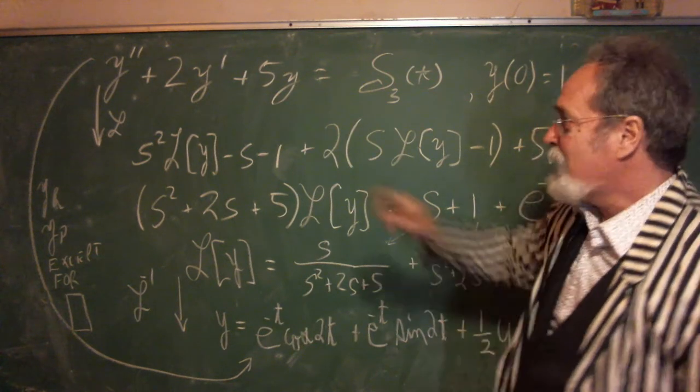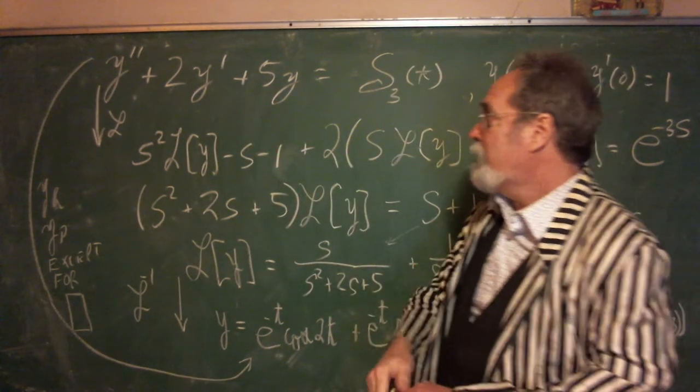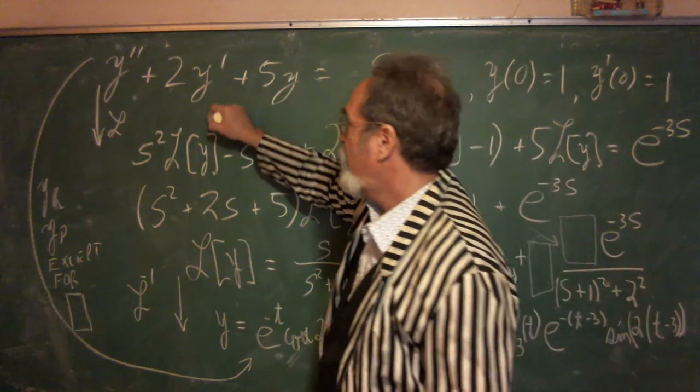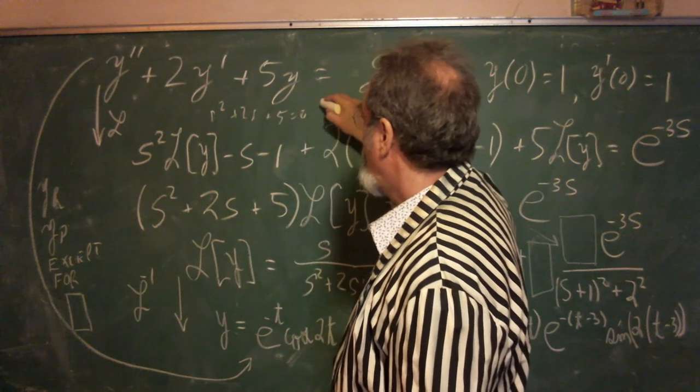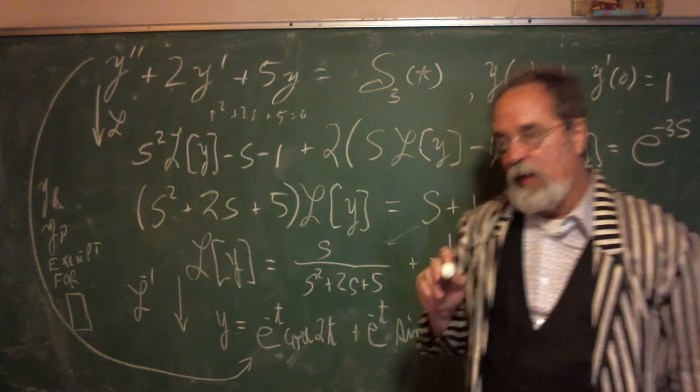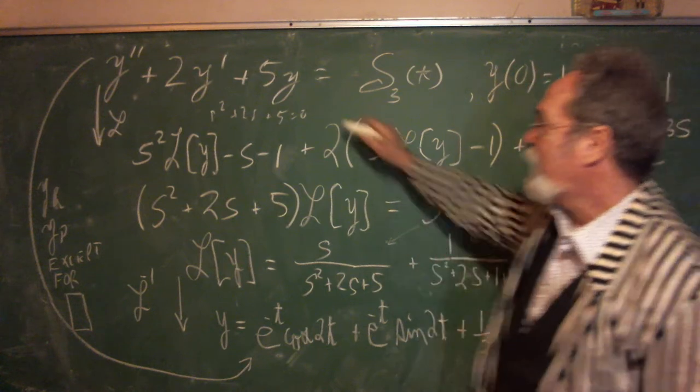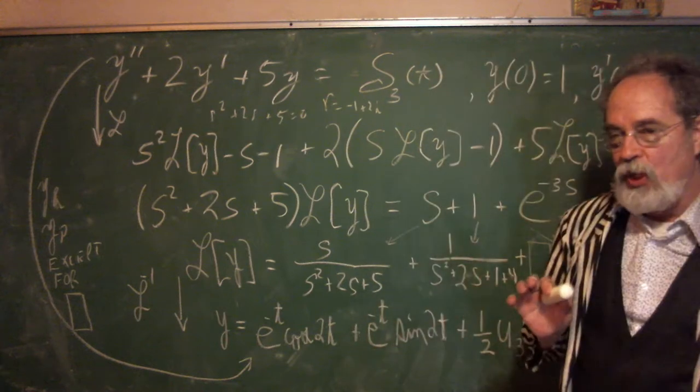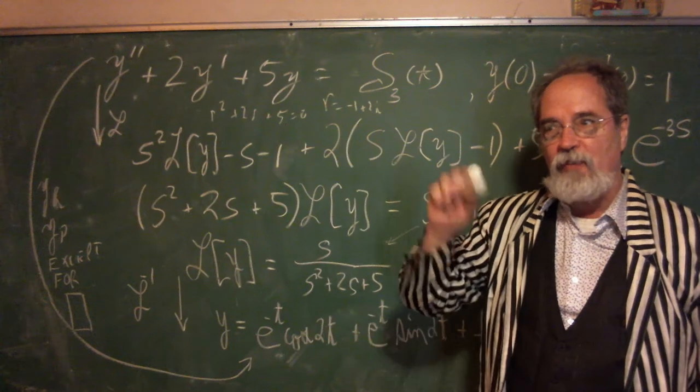But the idea is this: if you did the homogeneous of this, this would be - if you solved it, you'd have to do the r squared plus 2r plus 5 equals 0. And if you do the quadratic formula, that doesn't factor, you would end up with r equals negative 1 plus or minus 2i, which means you're gonna have e to the negative t and you have sine and cosine.